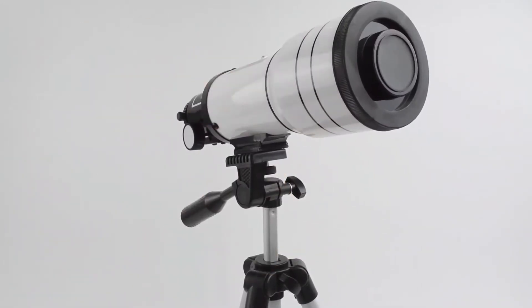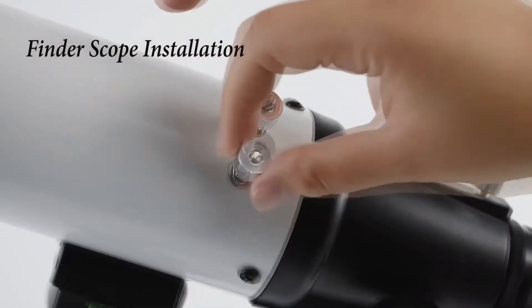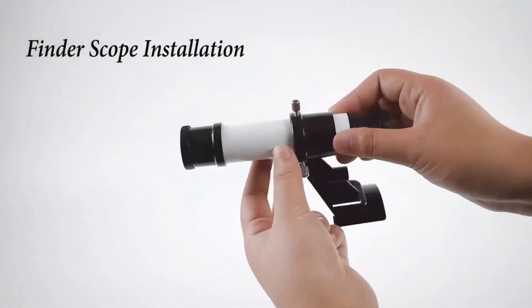Remove the thumb screws from the telescope main tube. Place the finder scope bracket onto the telescope tube and fix it by screw.